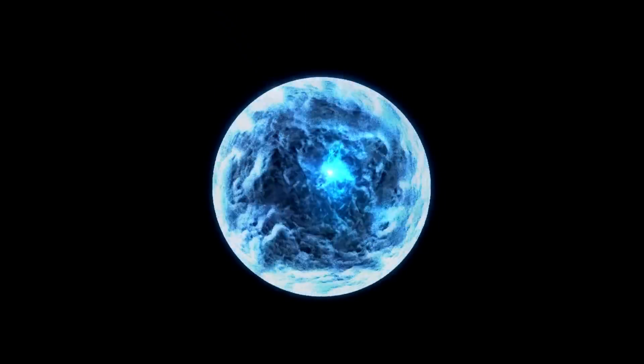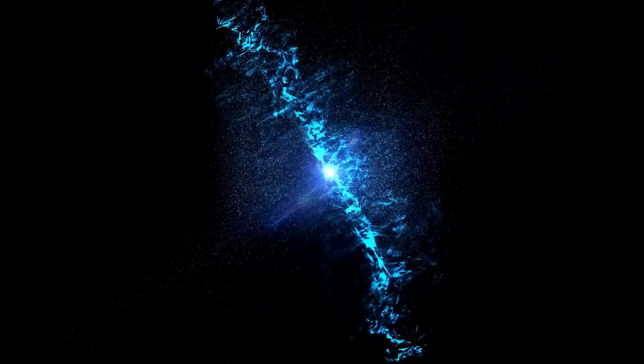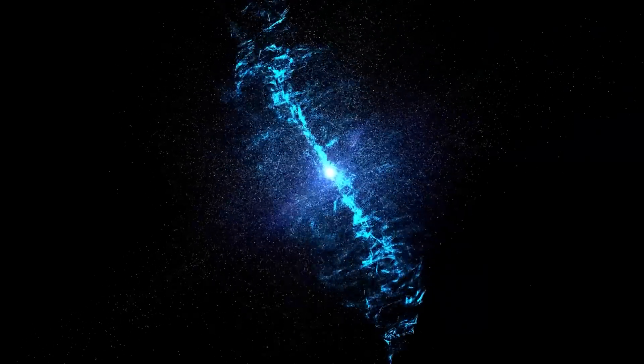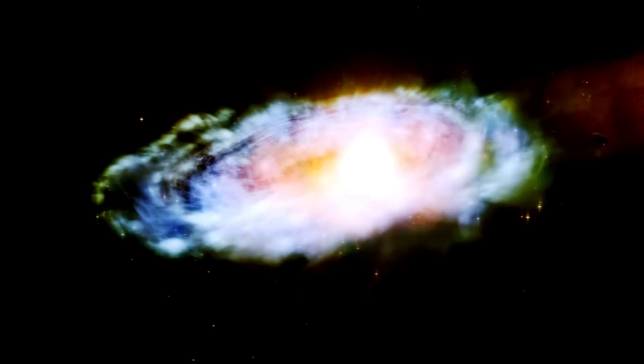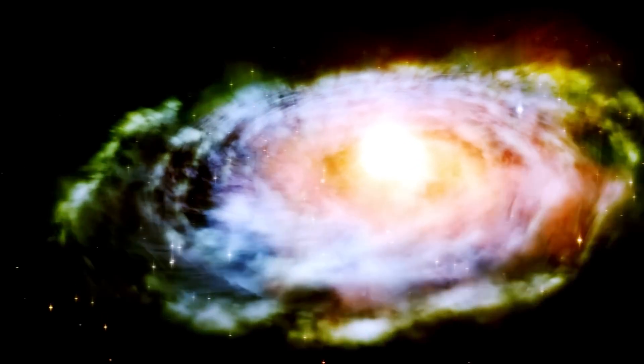When a huge star runs out of fuel and dies, it explodes as a supernova. As the star falls, most of its material is ejected in a massive explosion that emits a great deal of light. This light is so brilliant it can be seen from a long distance away.